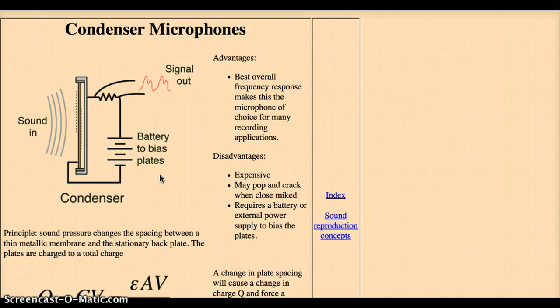In the condenser microphone, the air vibrations happen and force the top part of the two charged plates to oscillate. Like before, there's always a positive charge and a negative charge. The positive charge and negative charge are attracted to each other.